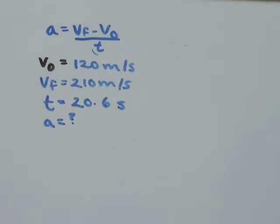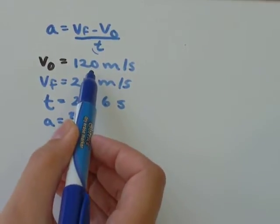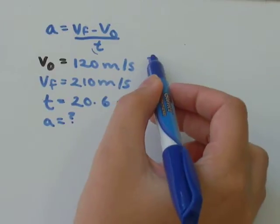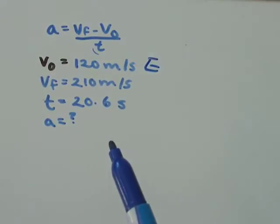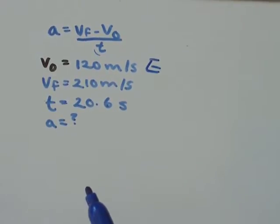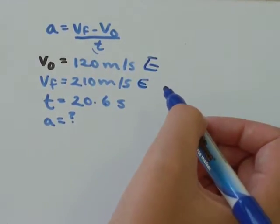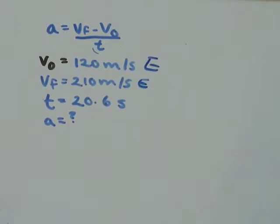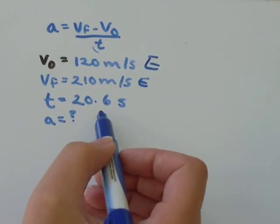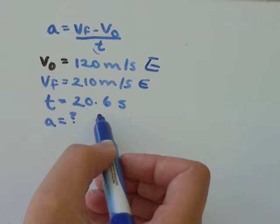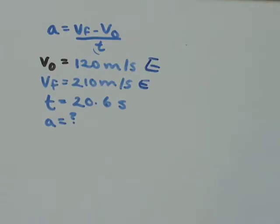I've got a question here. An object's initial velocity is 120 meters per second east, and it accelerates to a final velocity of 210 meters per second east. That acceleration happens over a time period of 20.6 seconds. We want to find acceleration.